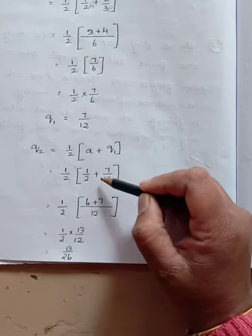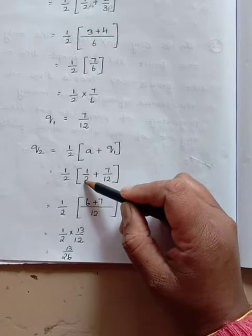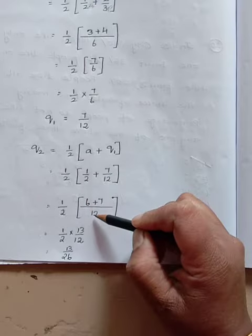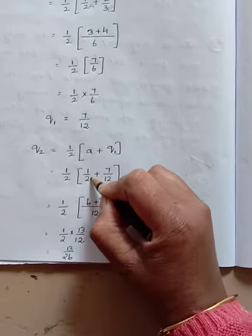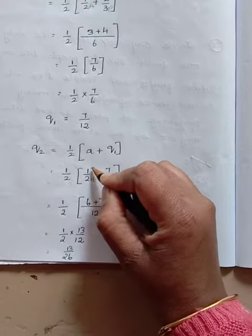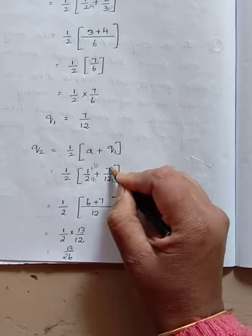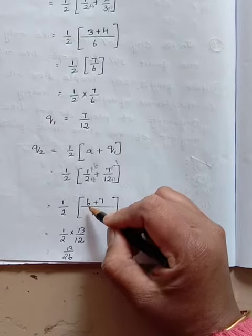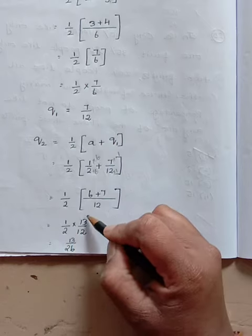Now here the denominator values are different. So let us take LCM. The LCM for 2 and 12 is 12. 2 to become 12 is into 6, 12 to become 12 is into 1. So 6 times 1 is 6 plus 7 equals 13. So half into 13/12.